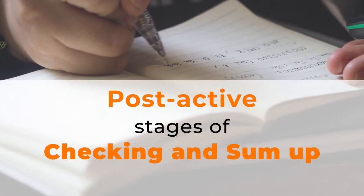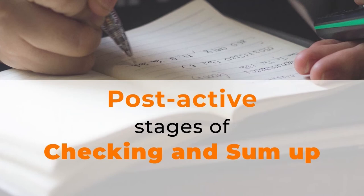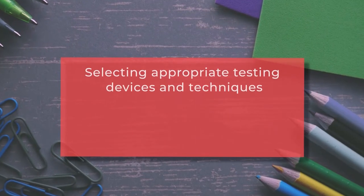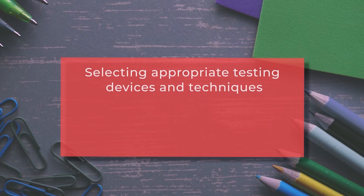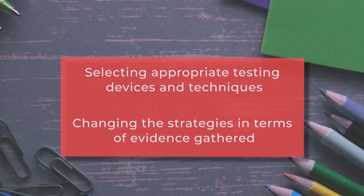In the post-active part, this is the evaluation stage and the stage of checking. We select appropriate testing devices and techniques — what type of test will be implemented, such as essay type, objective type, or practical test. This post-active part also involves changing strategies based on evidence gathered. If a particular technique is not achieving our goal, we can change our strategy accordingly.